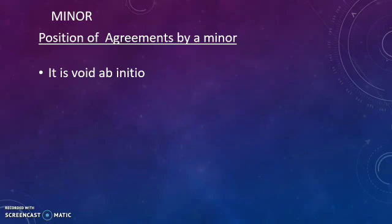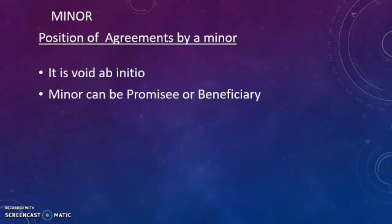A minor can be a promisee or beneficiary. There is no restriction on a minor from being a beneficiary or promisee. For example, a minor purchases a second-hand scooter for 25,000 rupees.